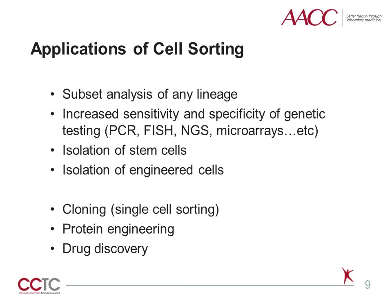There are many applications of cell sorting. In general, sorting will be used any time there is a need for separate analysis of different cell subsets. The sorted fractions in the previous example were sent to a molecular genetics laboratory for chimerism analysis in a patient with a history of allogeneic bone marrow transplant. In a clinical lab, cell sorting increases the sensitivity in molecular and cytogenetic assays. Cell sorting is also crucial in isolating stem cells for transplant and in isolating engineered cells which have been artificially manipulated in the laboratory. Additional uses include single-cell sorting for cloning purposes, protein engineering, and drug discovery.